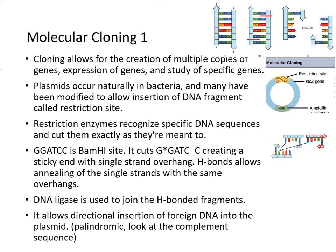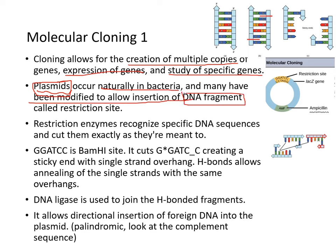So what does cloning allow us to do? It allows for the creation of multiple copies of a gene, expression of the gene, and the study of specific genes. Remember from microbiology — plasmids are naturally inside bacteria, and many of these plasmids have been modified to allow insertions of foreign DNA fragments using restriction sites. Here's an example of a restriction site. Restriction enzymes recognize specific DNA sequences and cut them exactly as they're meant to, always — it doesn't make an error.